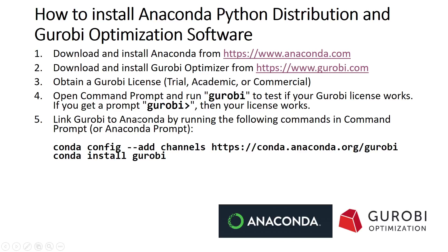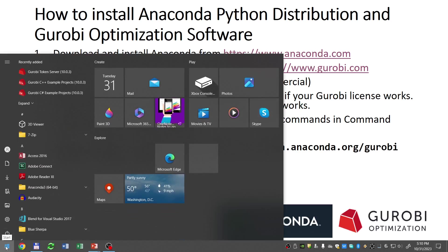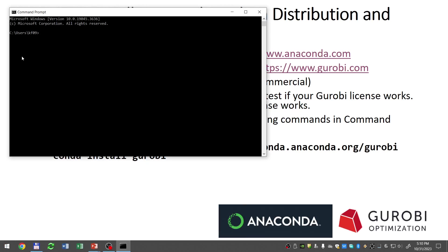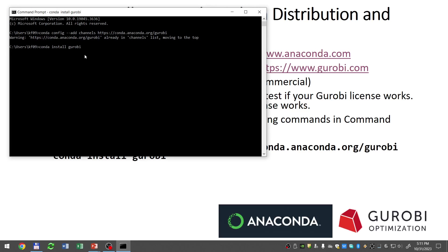Next, we have to link Gurobi to Anaconda so that within Jupyter Notebooks in Python we can use the Gurobi library for optimization. To do this, we need to open the command prompt or Anaconda prompt and run the following two conda commands: conda config add channel, and then conda install gurobi. I will open the Start menu, type cmd, run the command prompt, and copy and paste the conda config add channels line. This usually results in a warning that the channel is already there. Then we run conda install gurobi — this is going to install the Gurobi library within Anaconda. This usually takes time so I'm going to pause the recording here.